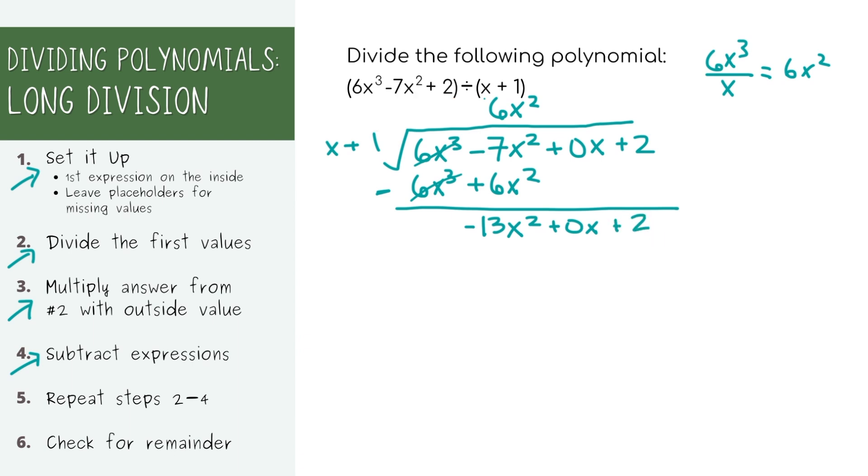Now we're just left with this expression that's a little shorter than what we started off with. And we're going to repeat steps 2 through 4. Let's just do one more round together. So let's look at our first terms again. x times what equals negative 13x squared? Negative 13x.